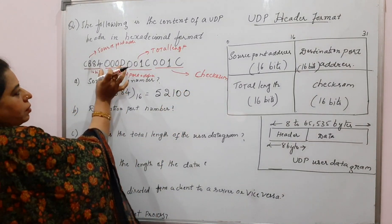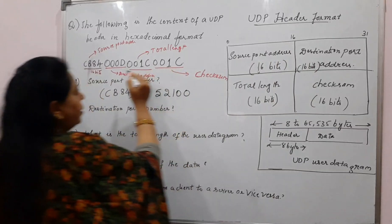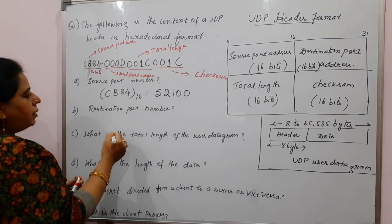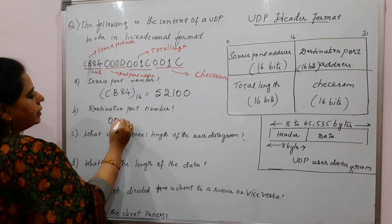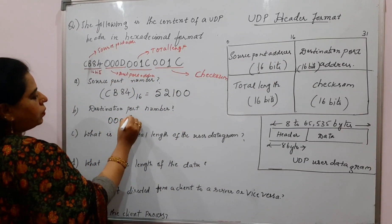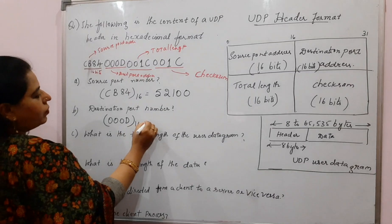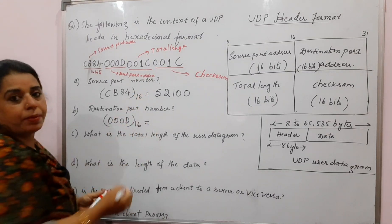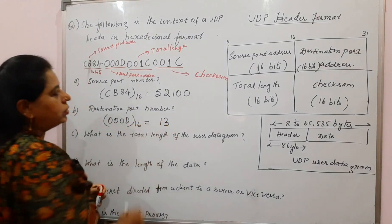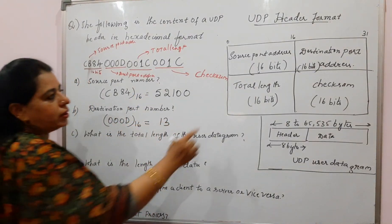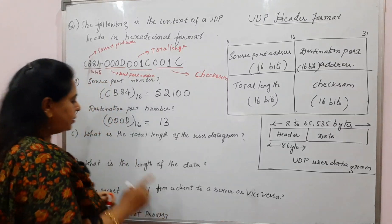The next four hexadecimal digits indicate the destination port number, which is 16 bits. The value given in hexadecimal is 000D. Convert this into decimal and the decimal value is 13. So 13 is the value for the destination port address.